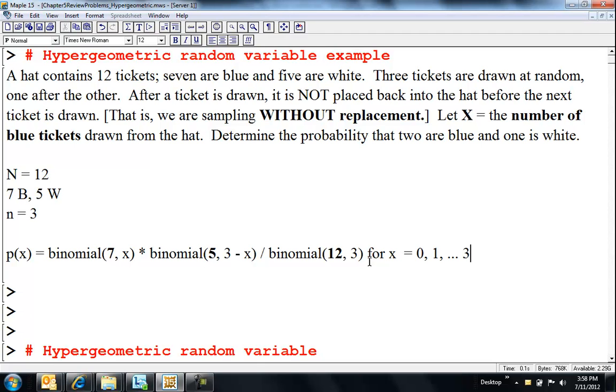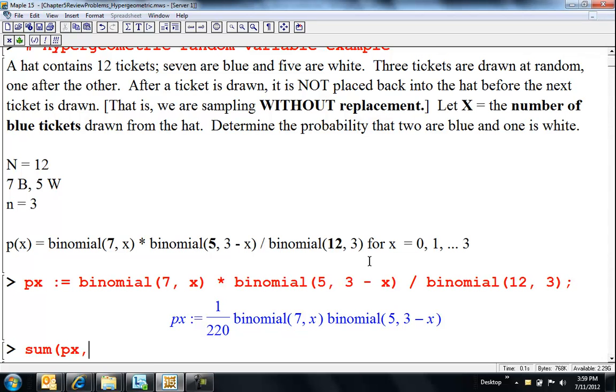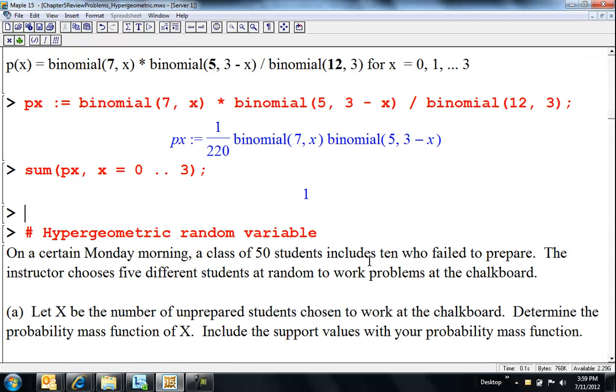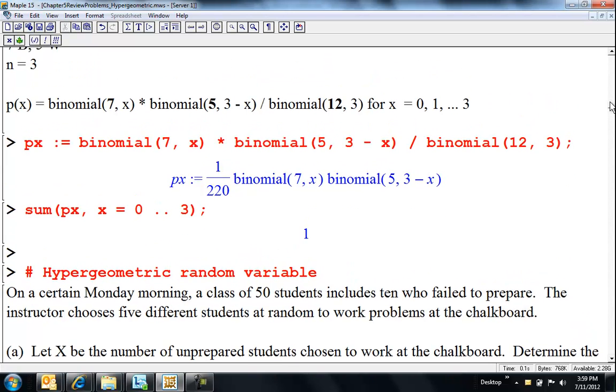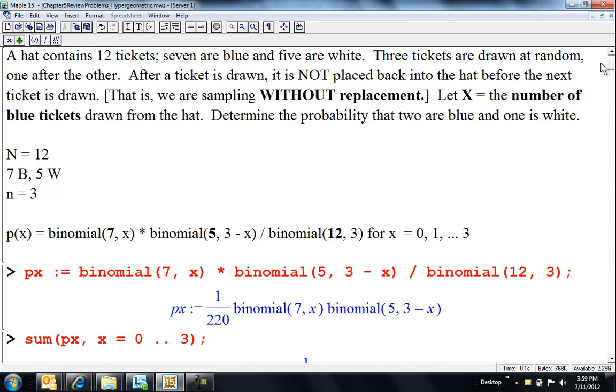And then I'm drawing 3, and X of them will be out of the blues, and 3 minus X of them will be out of the whites. And so that's my function, and this is defined for there could be no blues, one blue, all the way up to three blues. And notice I can't go beyond 3. I mean, I could go up to 7, but I'm not drawing 7. And so it's the minimum of how many you're sampling and how many, what do you want to say, the sample size of blues has in it.